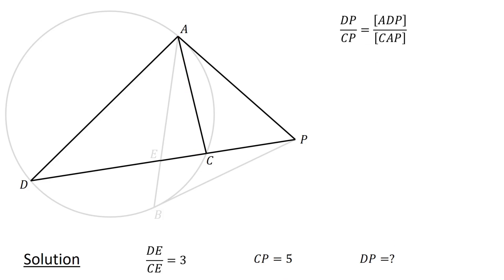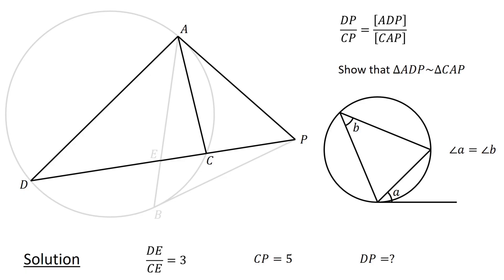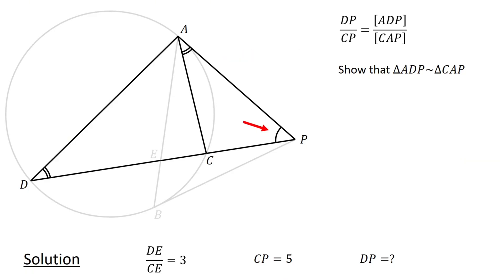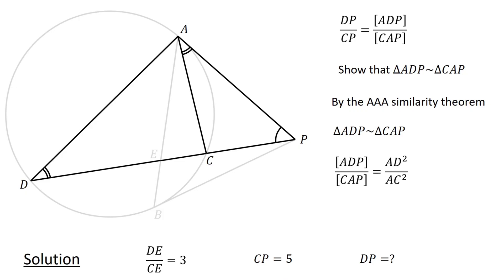Next, let us show that triangle ADP is similar to triangle CAP. By the alternate segment theorem, we have angle ADP equals angle CAP. Furthermore, this angle is common to both triangles. Therefore, by the AAA similarity theorem, the two triangles are similar. Since the ratio of the areas of two similar triangles is equal to the square of the ratio of their corresponding sides, we have area of ADP over area of CAP equals AD squared over AC squared.